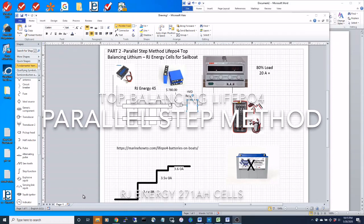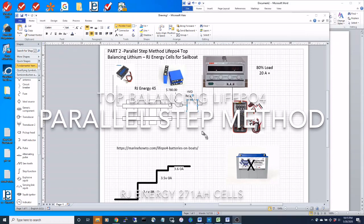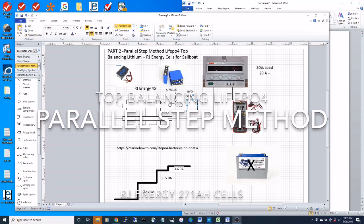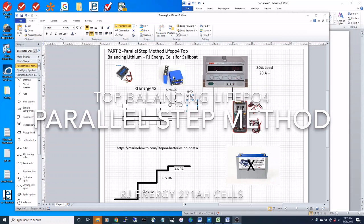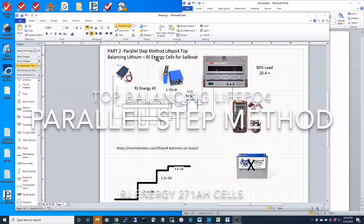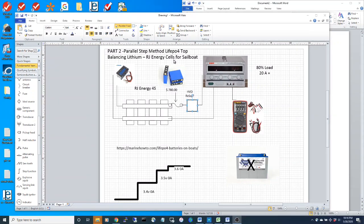This is the second video where I'm talking about the purchase and process of configuring these RJ energy cells that I bought. They're 271 amp hours.